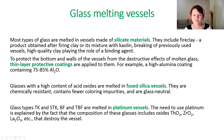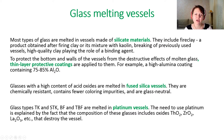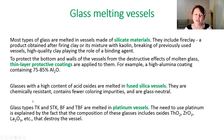Glasses with a high content of acid oxides are usually melted in fused silica vessels. Fused silica has a melting temperature of more than 1700°C, meaning we can synthesize glasses with melting temperatures lower than 1700°C inside such vessels. Glass types that include large amounts of thorium, zirconium, and titanium oxides are usually melted in platinum vessels, because such oxides very rapidly destroy silicate and fused silica vessels.